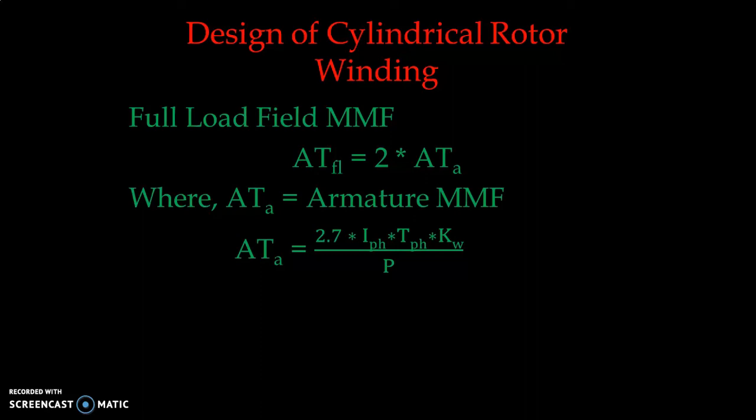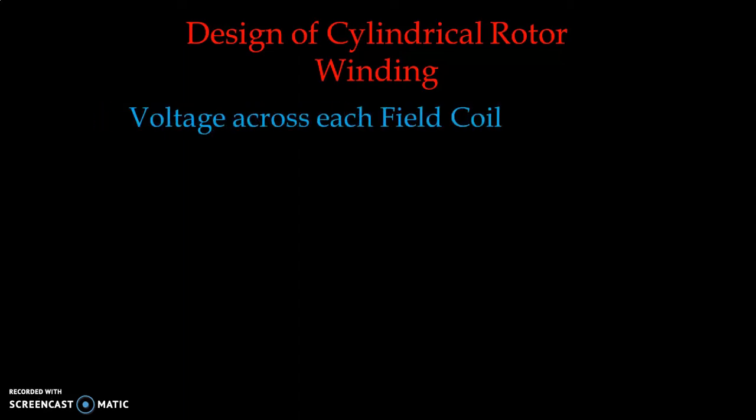Once the armature ampere-turns are available, we can calculate the MMF of the field winding. Now, the voltage across each field coil — Ef — is given by 0.8 to 0.85 times the excitation voltage Ve, divided by the number of poles P.